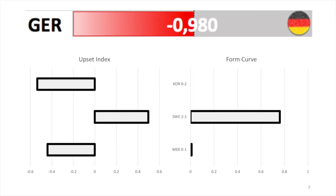The first grades we'll dish out are the F's, and of course no team was more disappointing than Germany, with an upset index of minus 0.98 — about as low as it can get. It's also the first time a team I don't necessarily cheer for lands that low on the performance index. When we look at the upset index, the Korea result and the Mexico result were big upsets and hence very low performances. Only the Sweden result stands out for Germany as something about as expected.